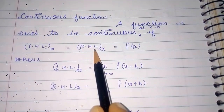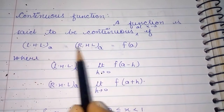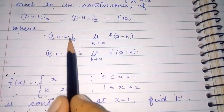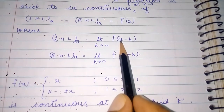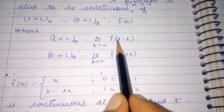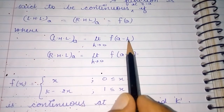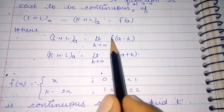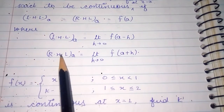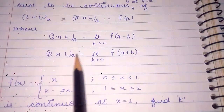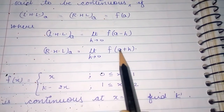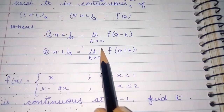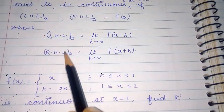Left-hand limit and right-hand limit is a topic we discussed earlier. The formula we use: left-hand limit at point A equals limit h tends to 0 of f(a minus h). Now for right-hand limit at point A: right-hand limit equals limit h tends to 0 of f(a plus h). This is a formula that you should learn directly.